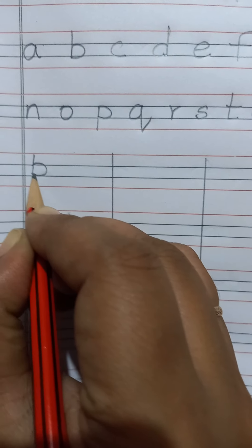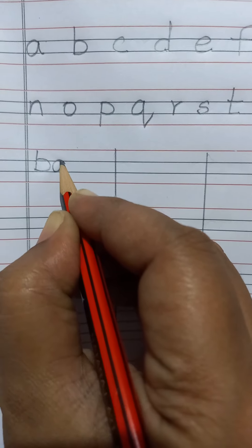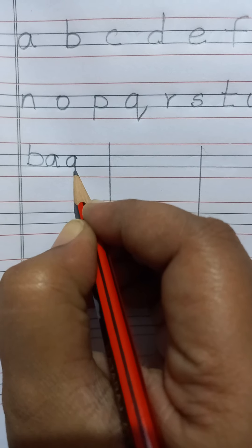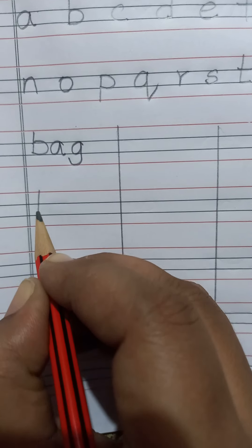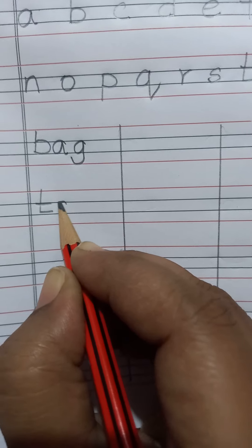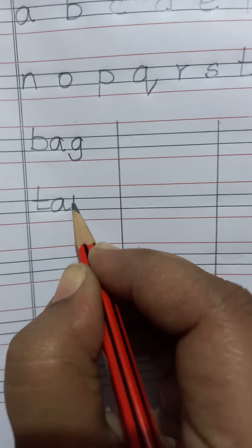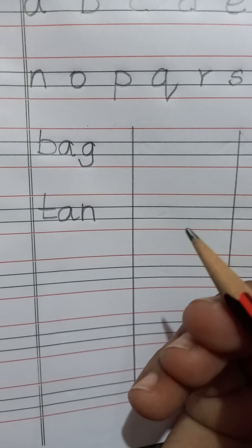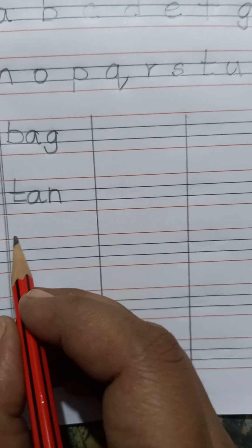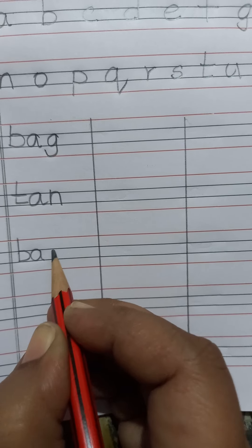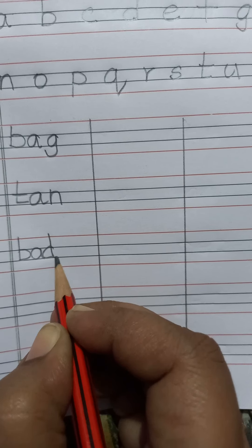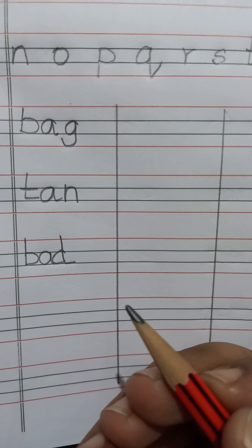Okay children, now put a line like this. First word: B. A. G. Bag. Next: T. A. N. Tan. B. A. D. Bad.